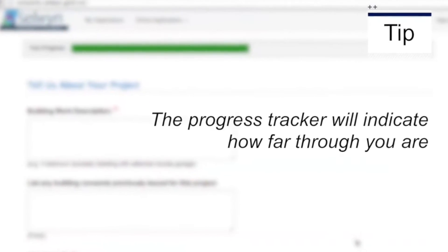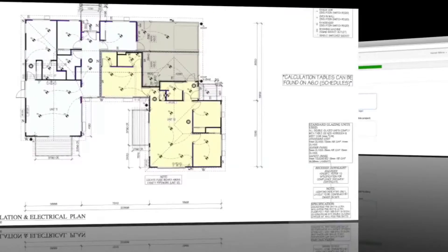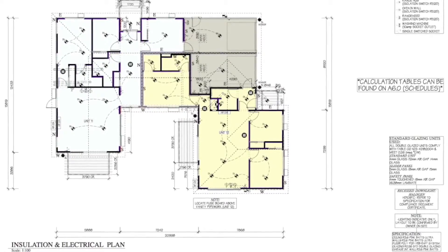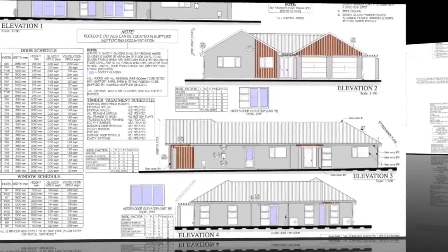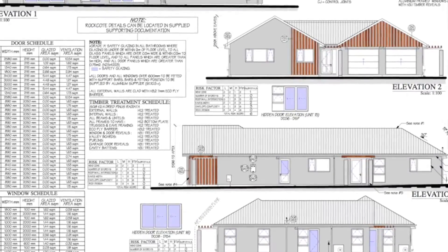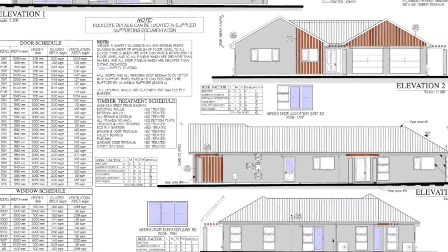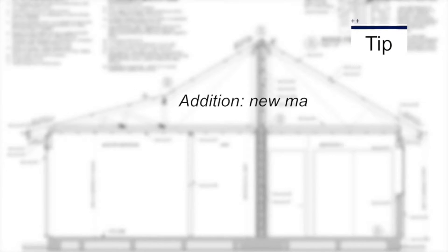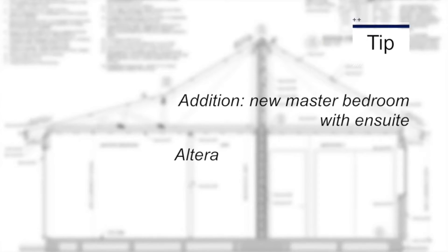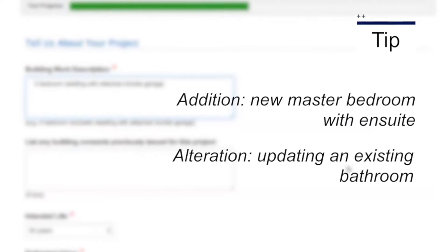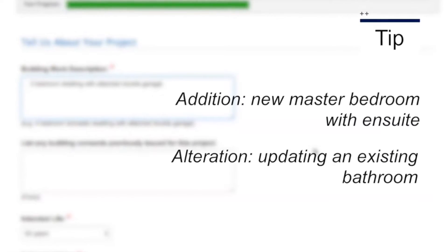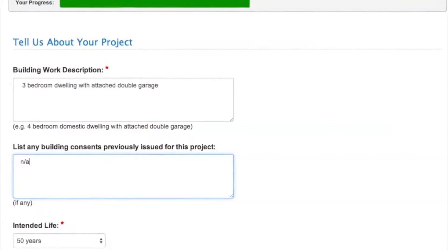You're halfway through your application. Now it's time to tell us the details of the project. It's essential that you give us as much detail as you can. You might be making a three-bedroom home with an attached double garage, or a new bathroom and bedroom with en suite, or updating an existing bathroom with a new bath or shower. If the building is up for demolishing, note this as well. Then make sure you know any relevant building consents previously issued.